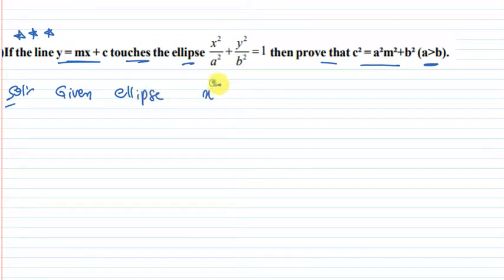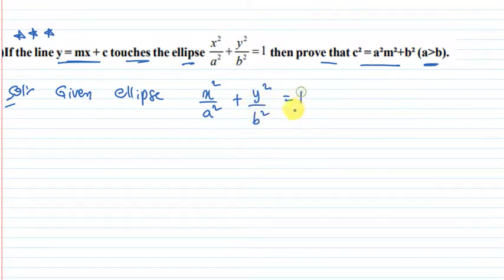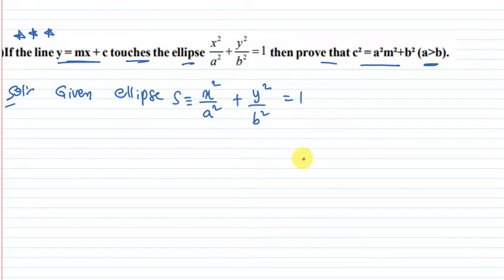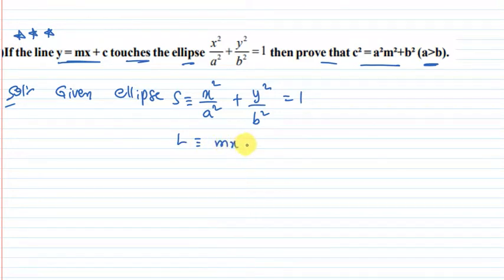The given ellipse is x squared by a squared plus y squared by b squared equal to one. The line equation is mx minus y plus c equal to zero.